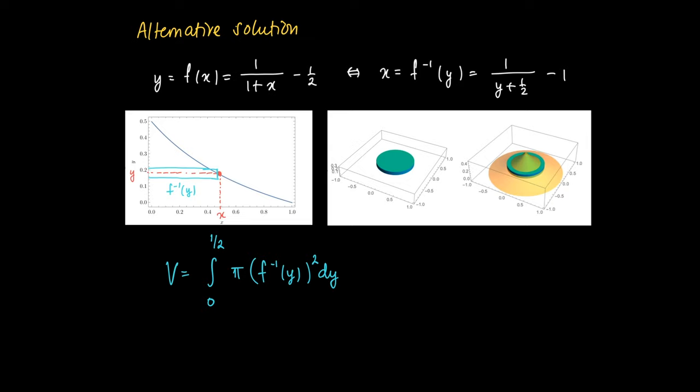So we get the volume as the integral from 0 to 1/2, which is the y value in 0, of pi times, and now we get the radius squared, but now the radius of such circular things is f inverse of y. So we get pi times (f inverse of y) squared.